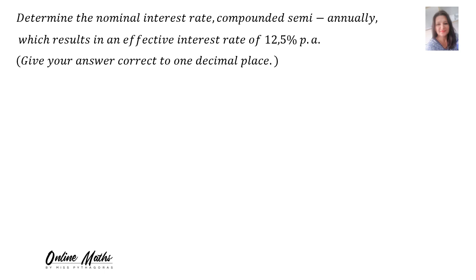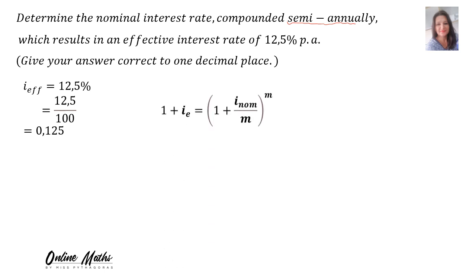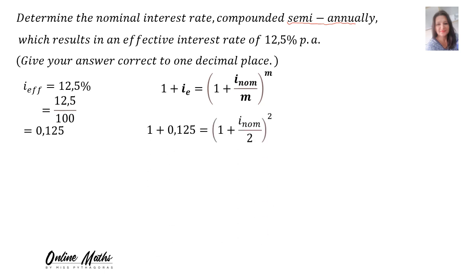In this example, determine the nominal interest rate compounded semi-annually — remember, that means half-yearly — which results in an effective interest rate of 12.5% per annum. Give your answer correct to one decimal place. The effective interest rate is 12.5% divided by 100, which is 0.125. Into the formula: 1 plus 0.125 equals bracket 1 plus I-nominal divided by 2, raised to the power of 2, because we are working this out semi-annually.